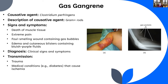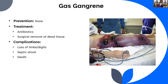Gas gangrene is a clinical diagnosis — the dying tissue is visibly obvious. There is no real prevention. Treatment includes antibiotics to prevent systemic spread, along with surgical removal of dead tissue, which may result in loss of limbs, digits, or permanent scarring and disfigurement. If it continues to progress, septic shock will occur and the outcome will be fatal.